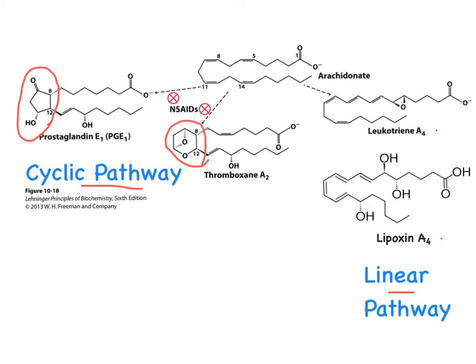Going through the linear pathway, leukotrienes contain 3 conjugated double bonds, or a triene. Lipoxins also contain conjugated double bonds but additionally have vicinal hydroxyl groups located adjacent to the triene. Those are the structural differences between the different classes of eicosanoids.